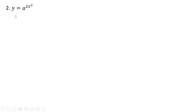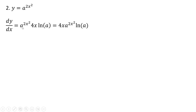Example two: y equals a raised to the 2x squared power. Rewrite the original function. The derivative of 2x squared is 4x, and that is all multiplied by the natural log of a. Rewriting a little bit, we can write it like this.